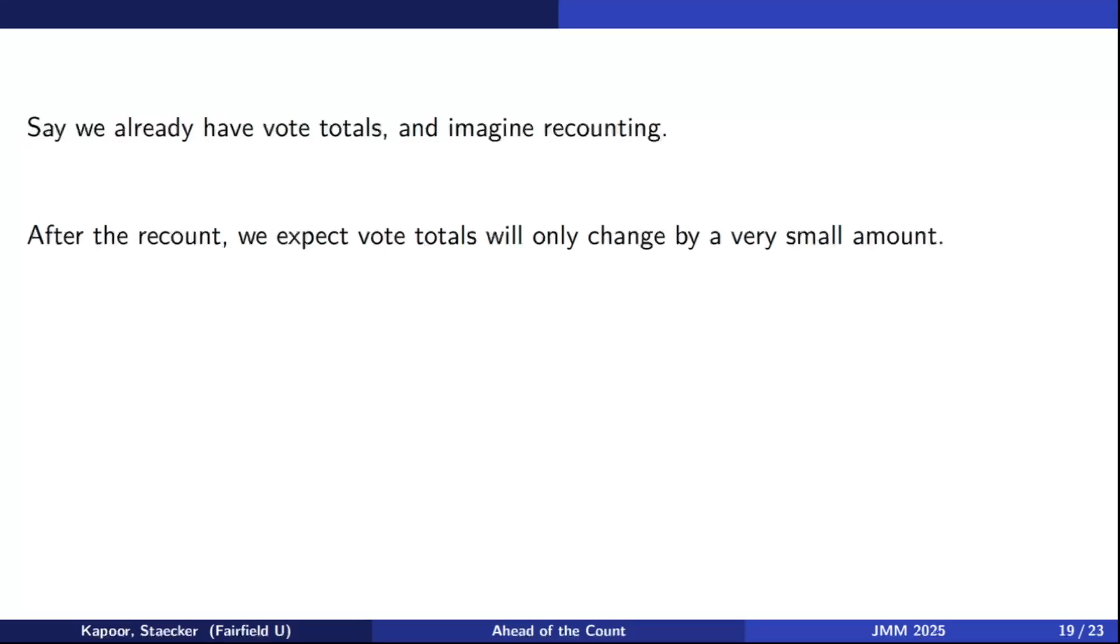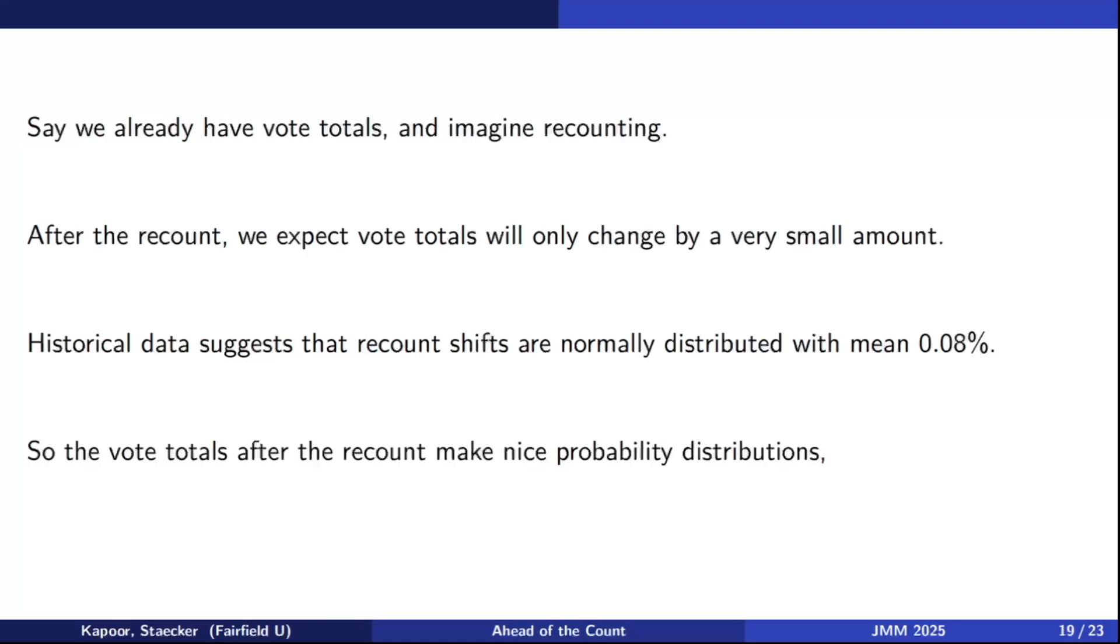Anyway, the idea here is let's say we already have done the election. We have all the vote totals and everything, and we are considering doing a recount. Now, when you do a recount, what happens is basically the vote totals that you get after the recount are basically the same as the ones you started with. They might change by a very small amount, but this is how recounts work. And how much generally do recounts change the vote totals? You can look at like historical data about recounts that have happened. Historical data that we've seen suggests that the recount shifts are normally distributed with a mean of about 0.08%. So that means if you're going to do a recount, you would expect all of your vote totals to shift according to a normal distribution, on average with 0.08% of a shift. And there's a standard deviation that you can measure empirically also. So anyway, what that means is if I'm considering doing a recount, the vote totals that I expect to obtain after the recount make nice probability distributions. And so we can apply our algorithm that I've been deciding before. So our algorithm can probabilistically at least predict the results of the recount.